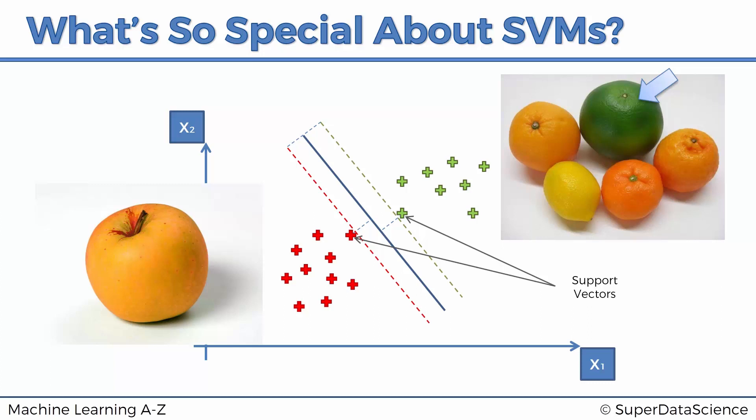Those are the support vectors. The support vectors are actually very close to the boundary. They're very close to the other class.